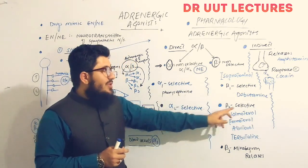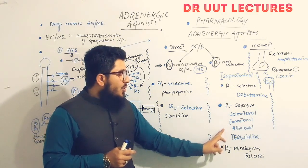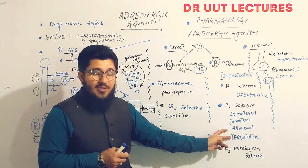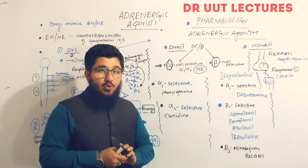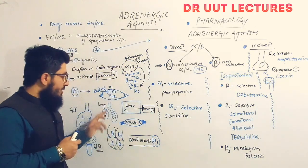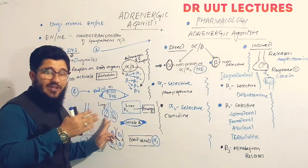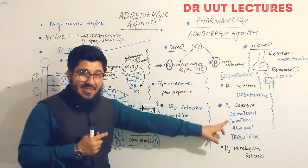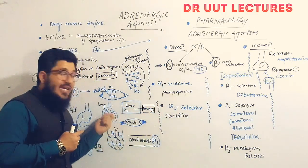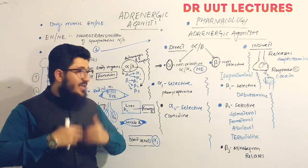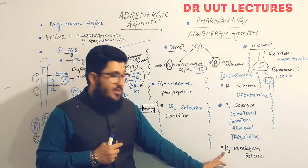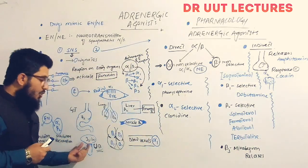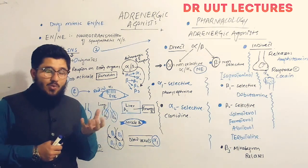Beta-2 selective agonists include salmeterol and formoterol — which are long-acting beta-2 agonists — and albuterol and terbutaline, which are short-acting beta-2 agonists. These medications are used for respiratory disorders. When beta-2 is stimulated in the lungs, it causes bronchodilation. Giving these drugs causes ease in breathing for patients who feel uncomfortable. Beta-3 agonists — example: mirabegron — relax the detrusor muscle of the bladder, increasing the bladder's capacity to hold urine.